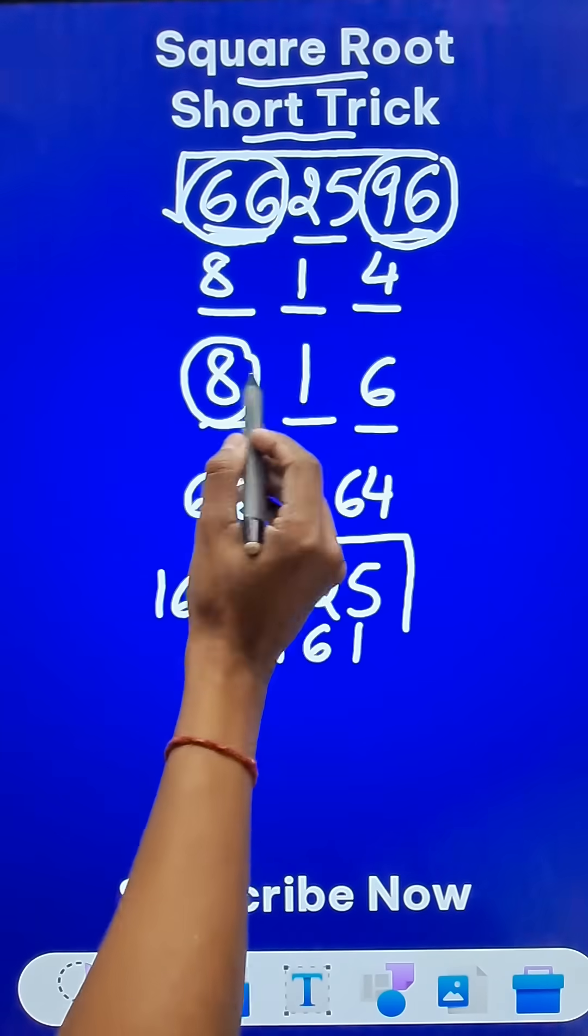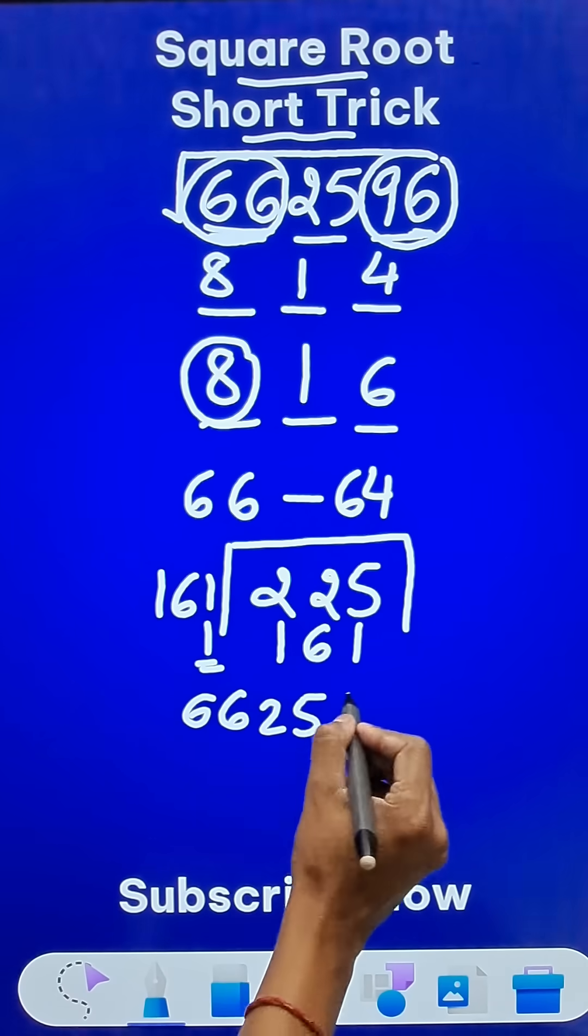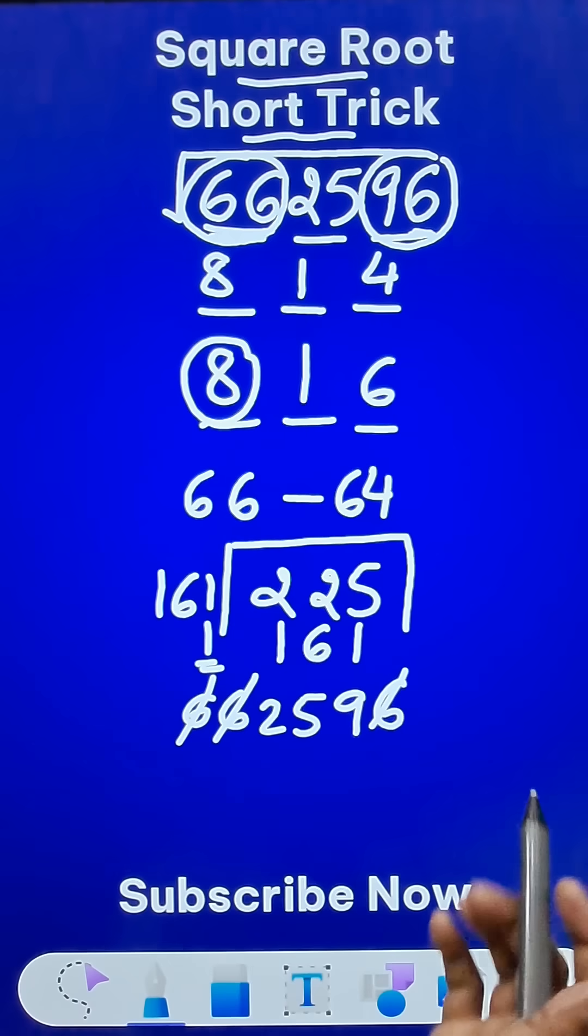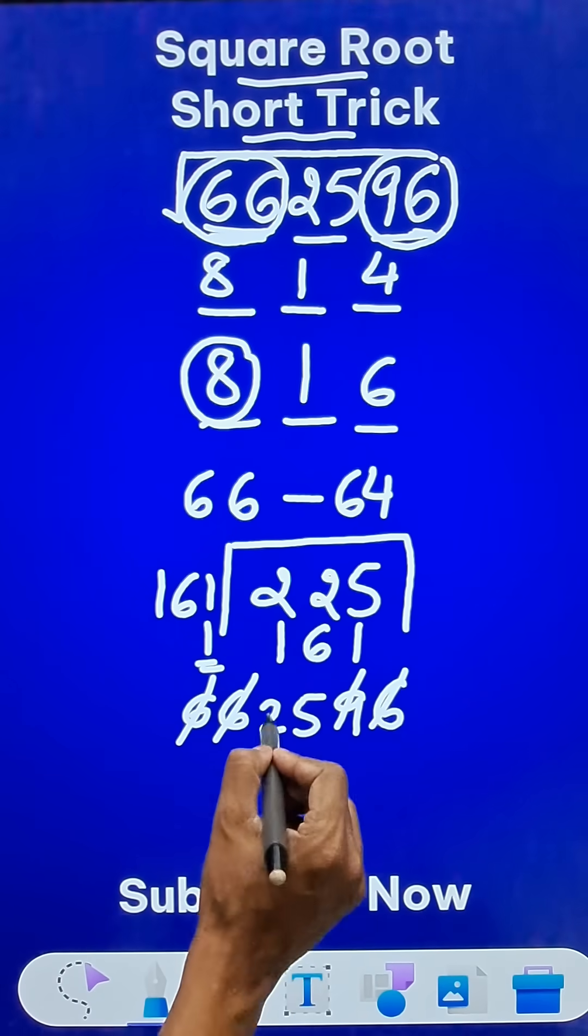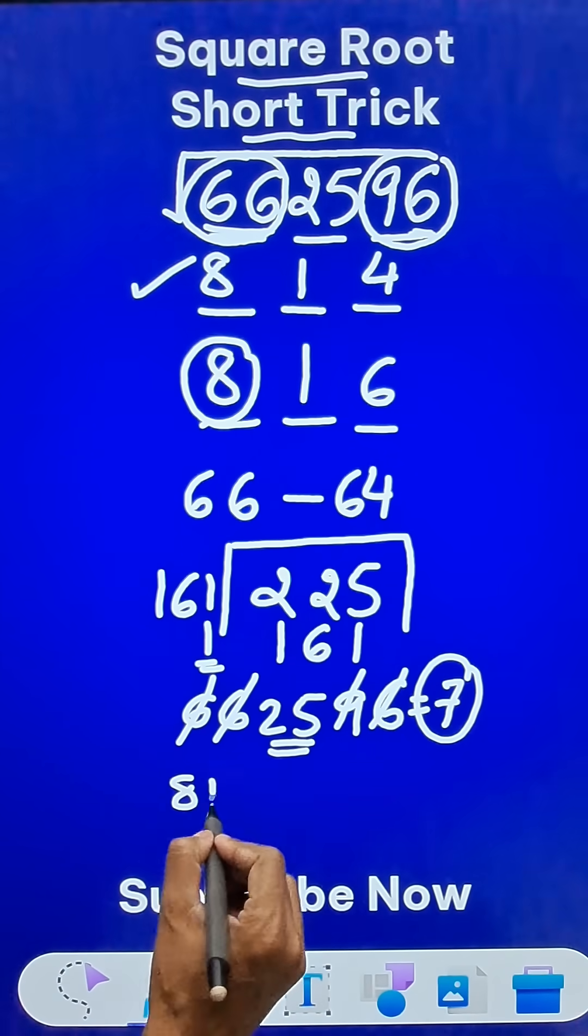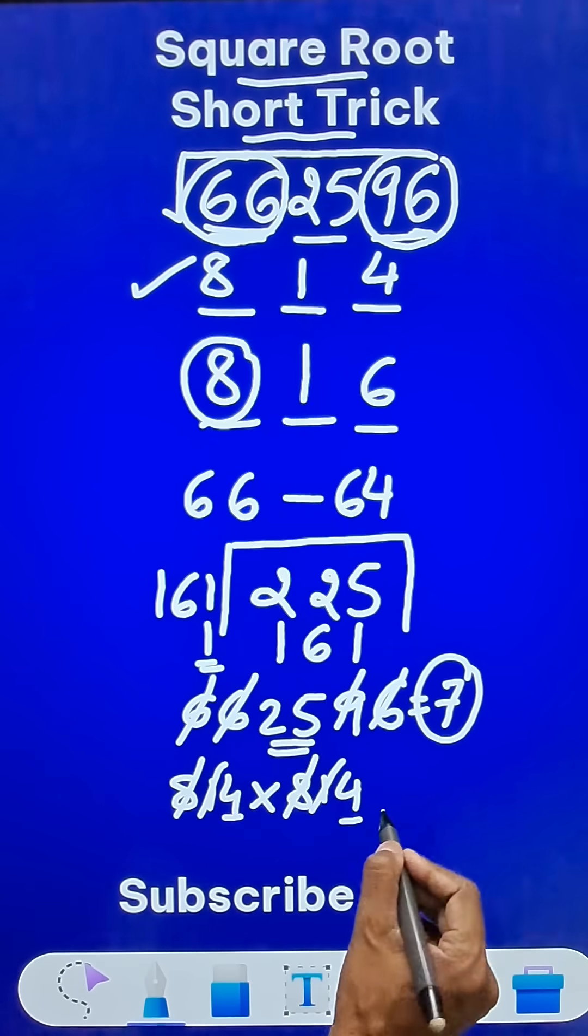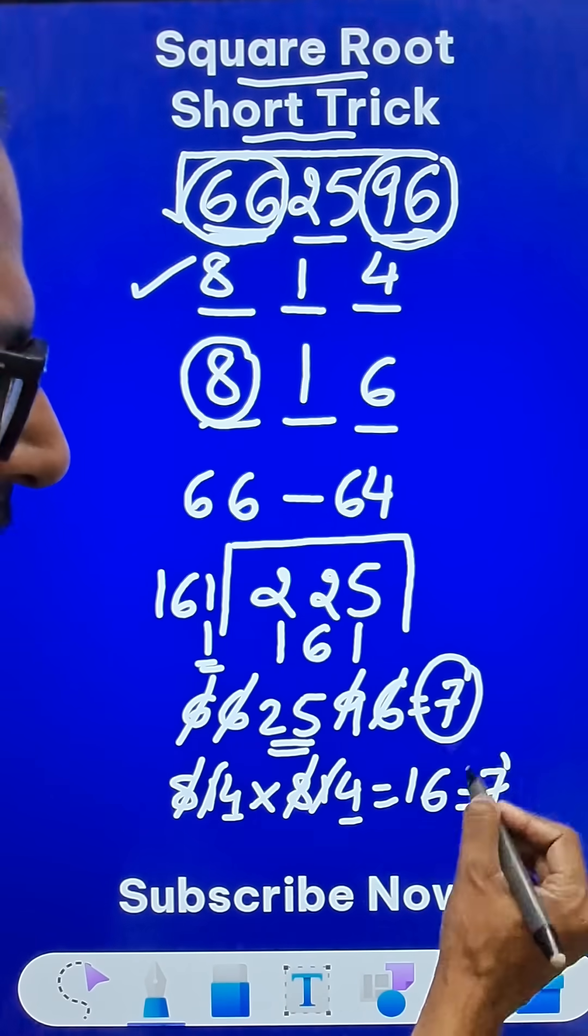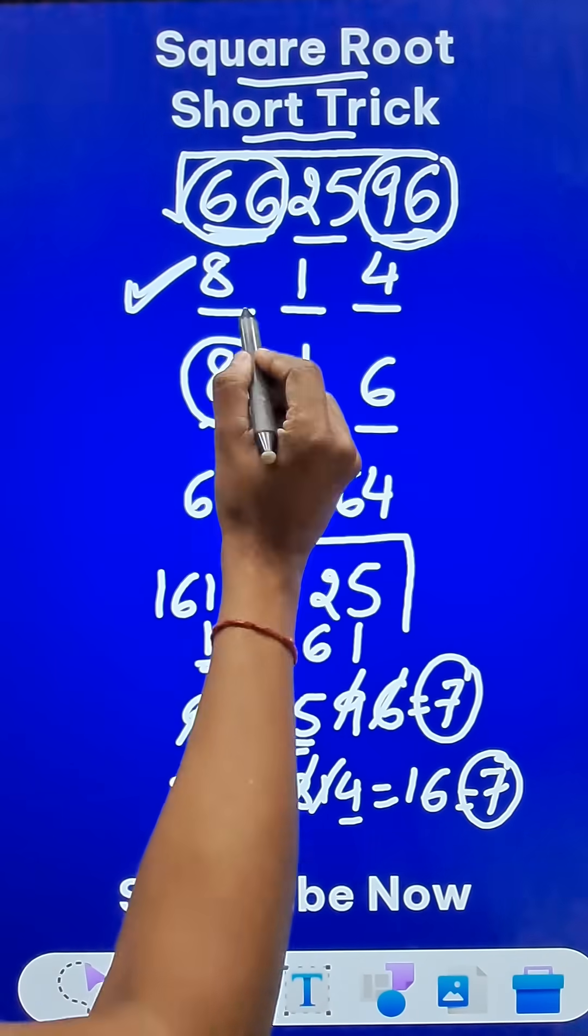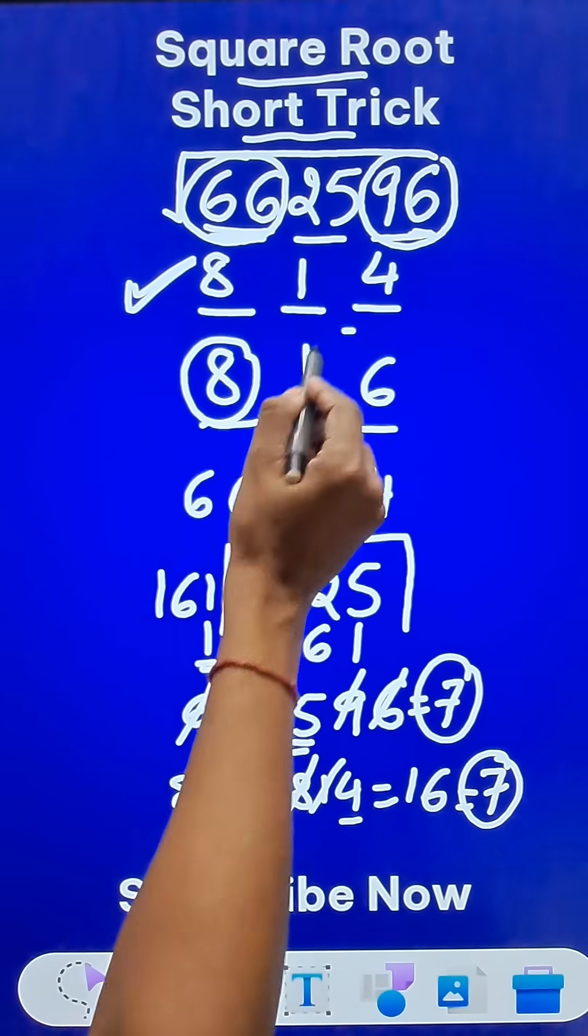Now which one is correct? 814 or 816? For that, you have to add all the digits of 662596. 6 plus 6 plus 6 is 18, which is divisible by 9. So you can just ignore that. Ignore the 9. And then 5 plus 2 gives you 7. Now remember this 7. Now check 814. 814 times 814. 8 plus 1 is 9. 8 plus 1 is 9. 4 into 4 is 16. And 6 plus 1 is 7. And what happens now? Because you match this single digit, 814 is your answer. If you do it with 816, you are going to get a different single digit, which will eliminate this response.